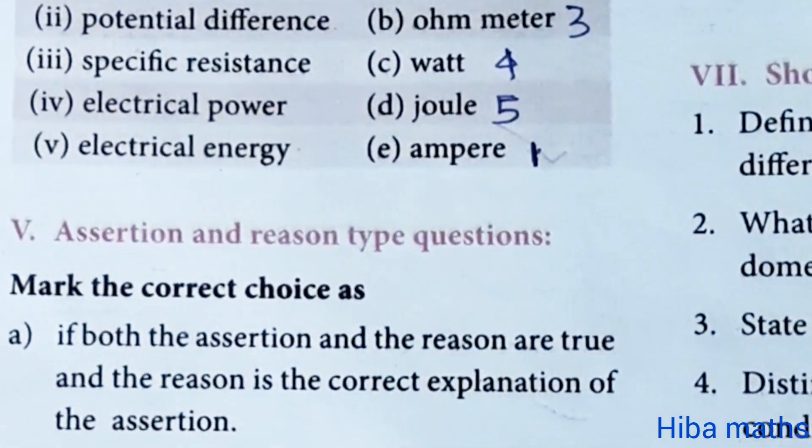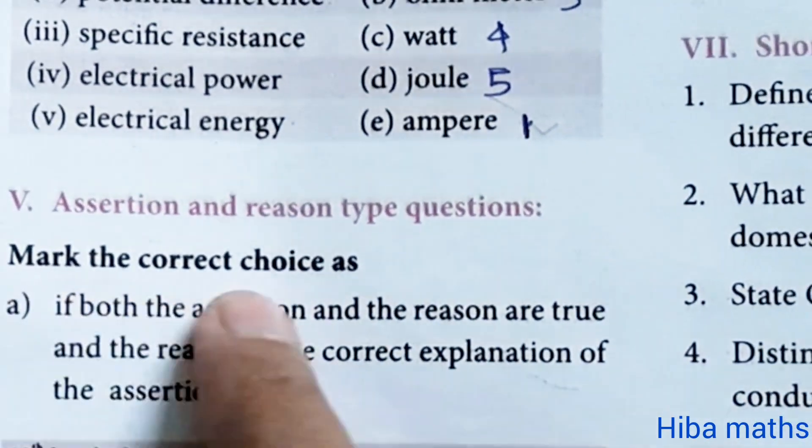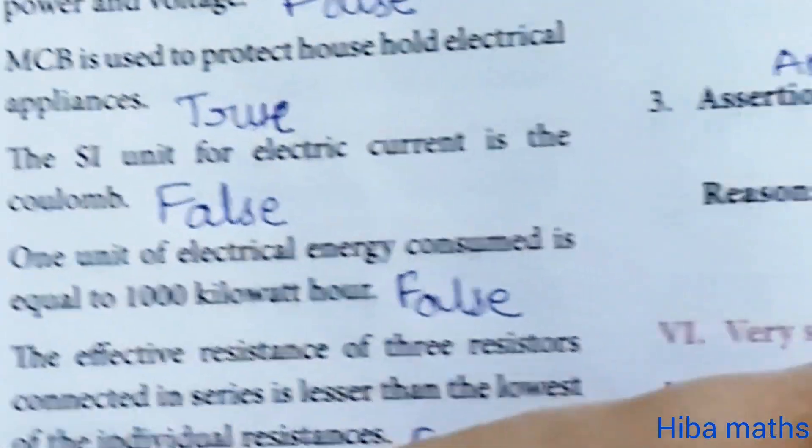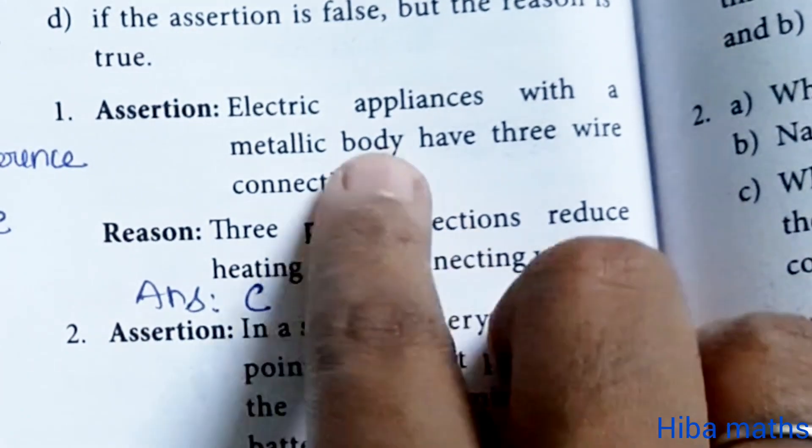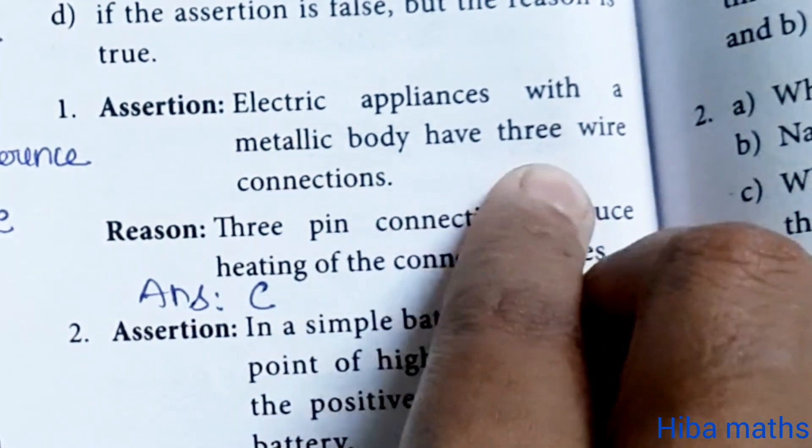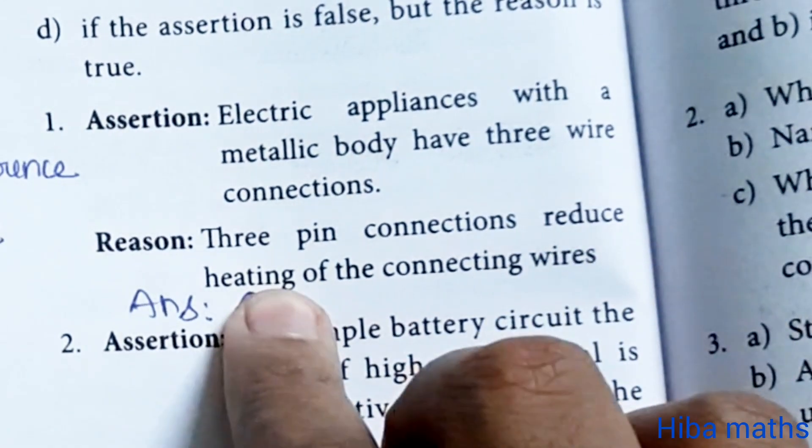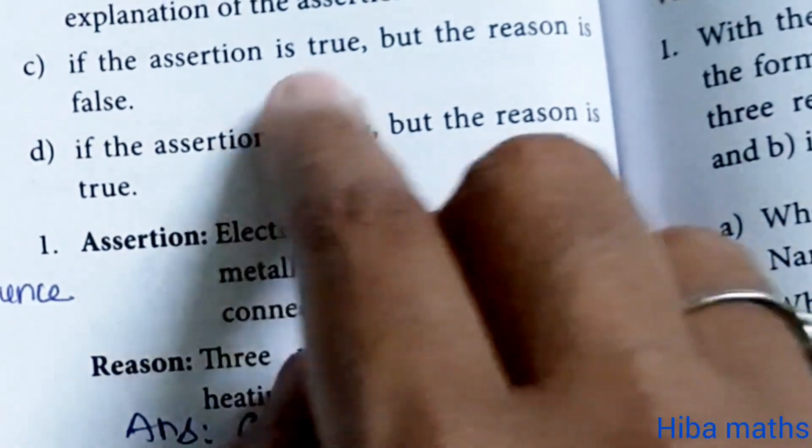Assertion and reasoning. Mark the correct choice. First question: electric appliances with a metallic body have three wire connections. Three pin connections reduce heating of the connecting wires. Answer is C. If assertion is true, but the reason is false.